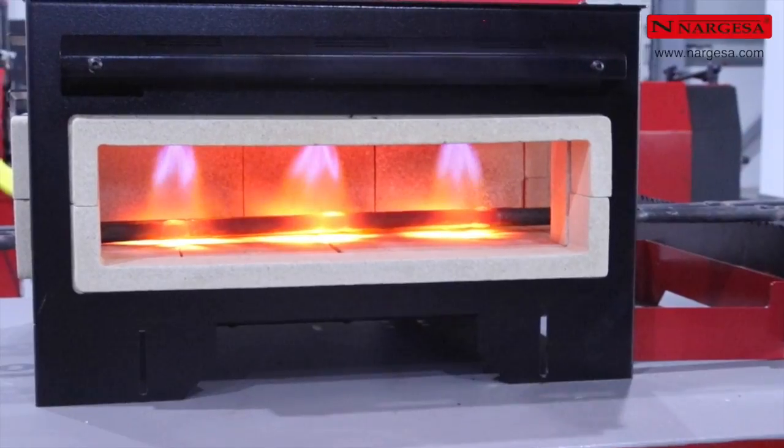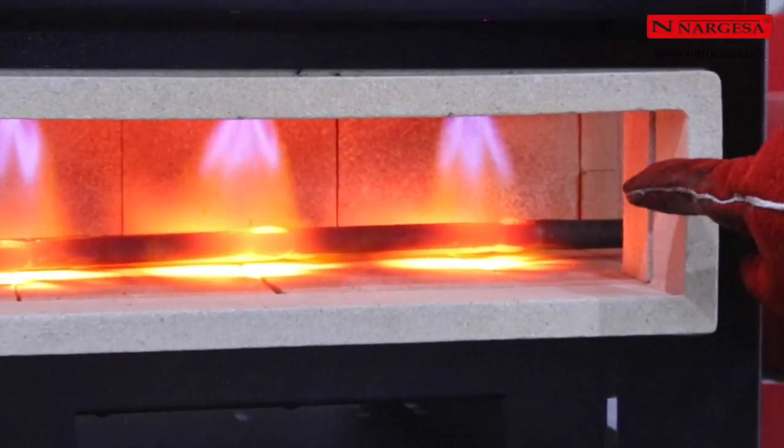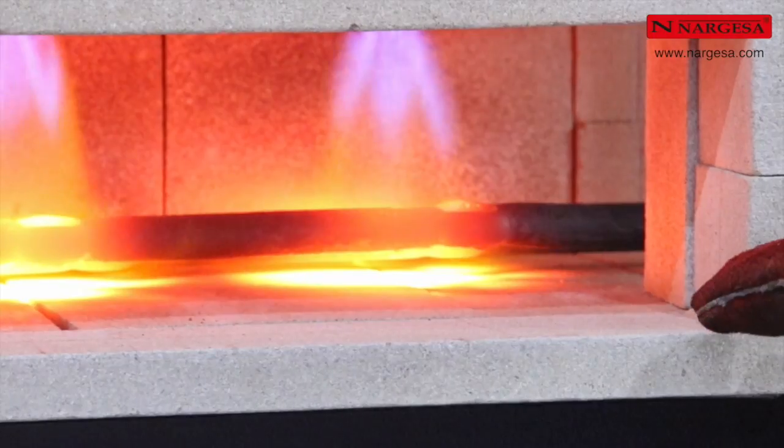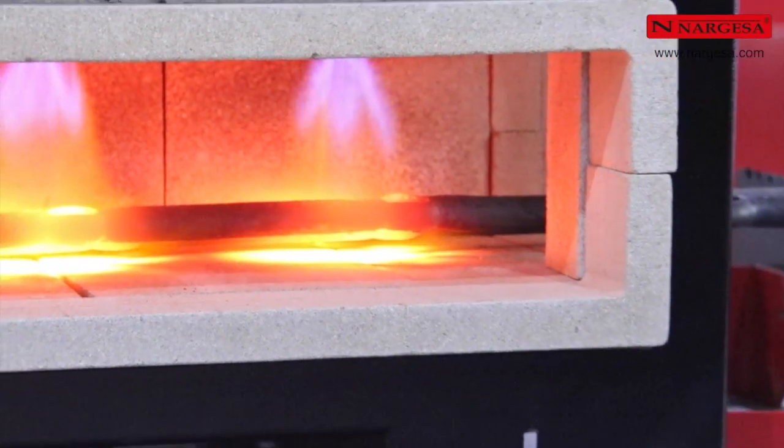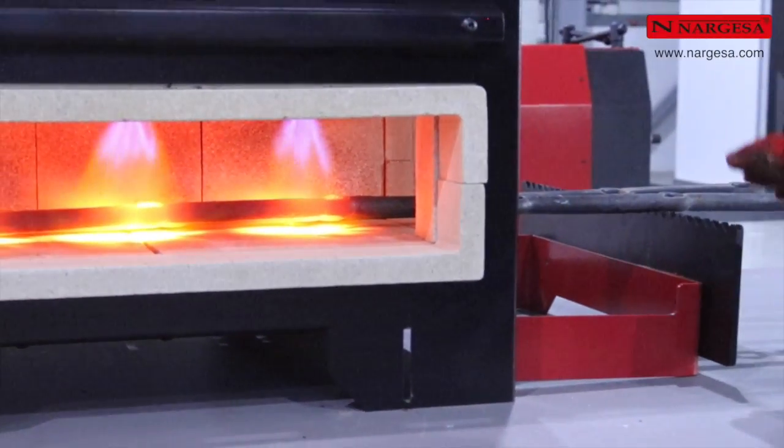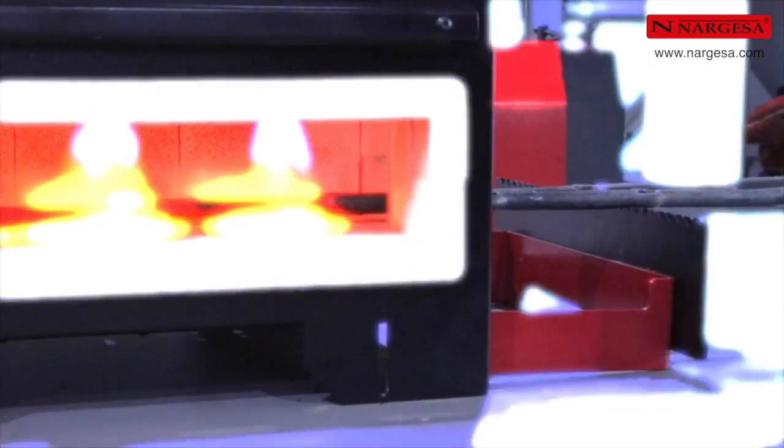Pour accélérer le processus de mise à température, il est important que la barre soit légèrement séparée de la base de la chambre de combustion. Il faut ajuster la hauteur du support pour positionner correctement les barres.